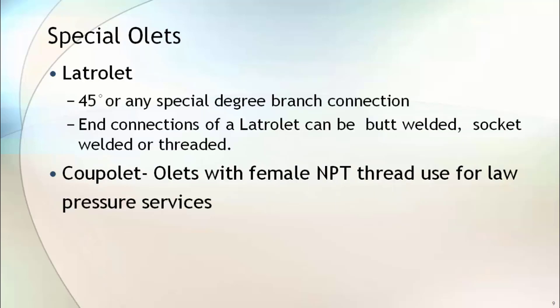Sometimes special OLETs such as laterolet and cupolet are also used in process piping. Laterolet is used for taking a branch connection that is not at 90 degrees to the run pipe. It comes in 45 degrees or any other special degree as required by the purchaser. The end connection of laterolet can be butt weld, socket welded, or threaded type. Cupolet is an OLET with a female NPT thread and is used for low-pressure services.